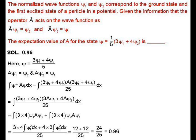In question 42, the normalized wave functions ψ₁ and ψ₂ correspond to the ground state and first excited state of a particle in a potential. Given that operator Â acts on the wave function as Âψ₁ = ψ₂ and Âψ₂ = ψ₁, the expectation value of A for the state ψ = (1/5)(3ψ₁ + 4ψ₂) needs to be calculated.